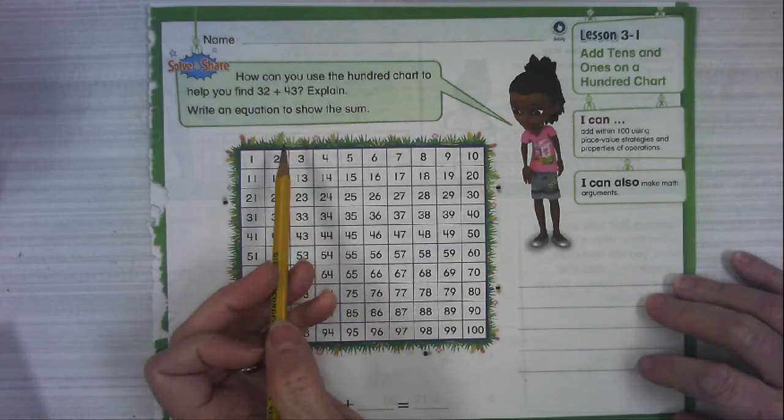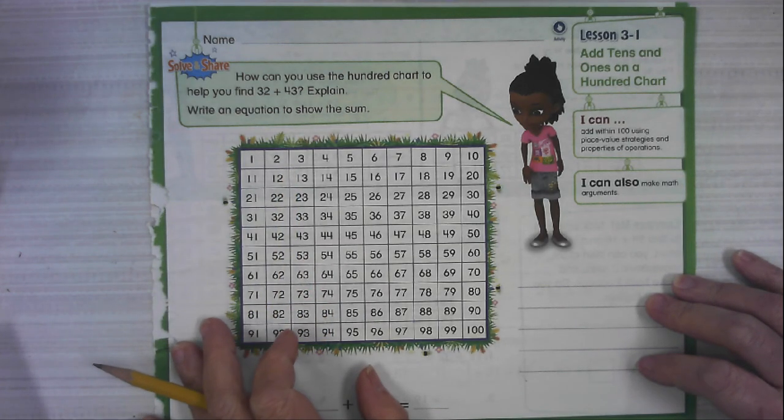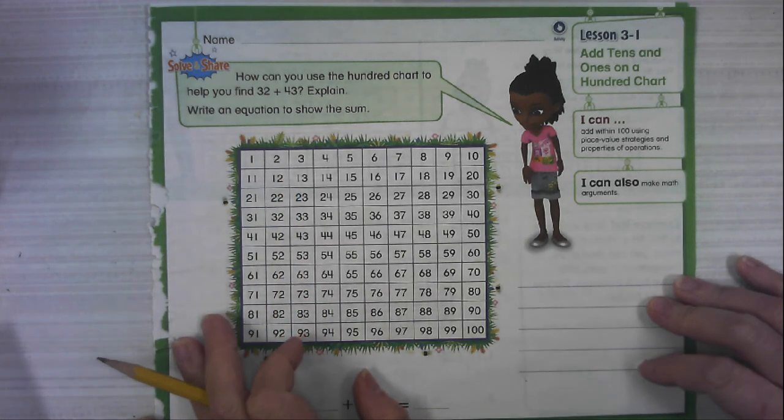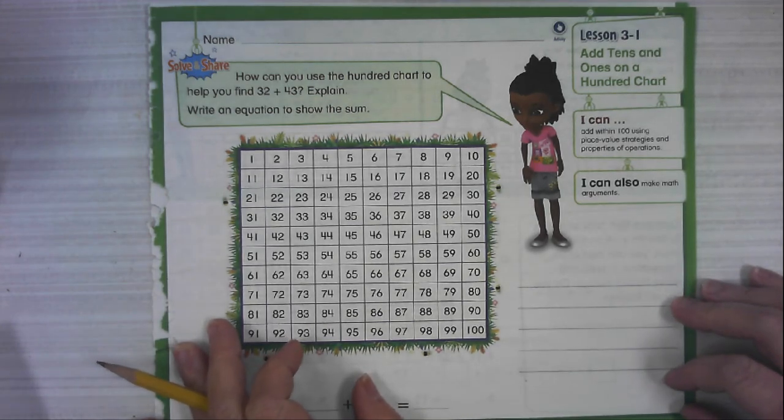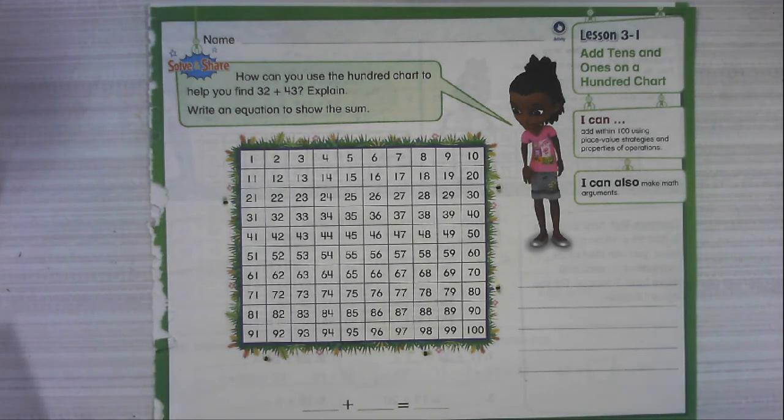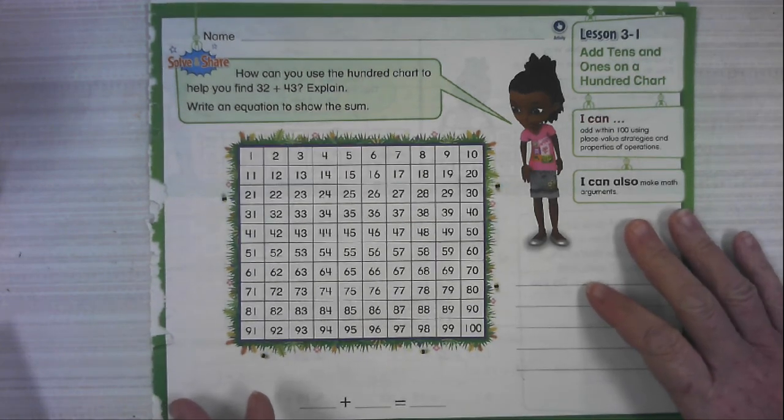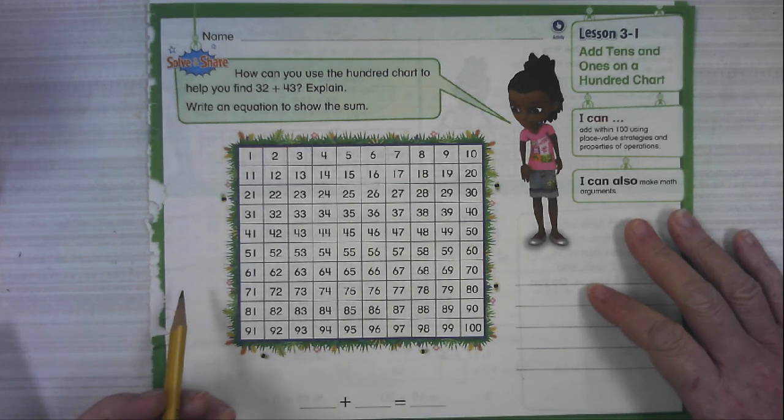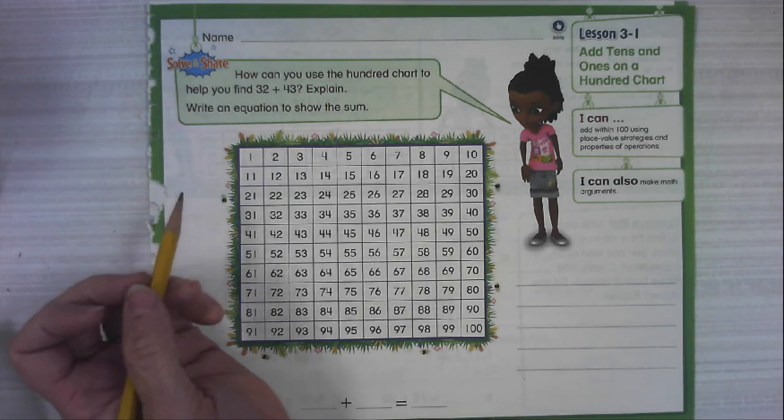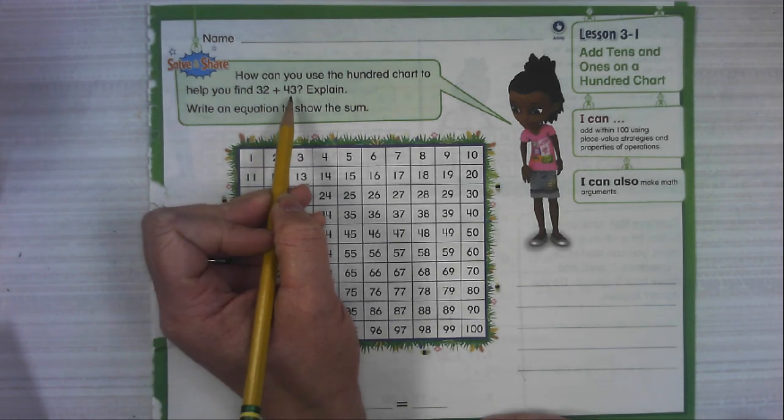Alright, how can you use a hundreds chart to help you find 32 plus 43 and explain. We're going to write an equation to show our sum. Now I hope, I'm not sure if you learned this in first grade, but it's really helpful if we start with the biggest addend, the greatest one. So what's greater, 32 or 43?